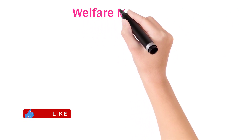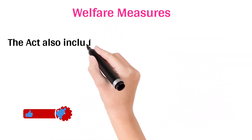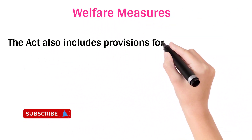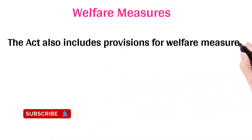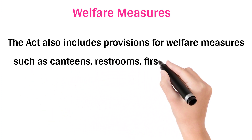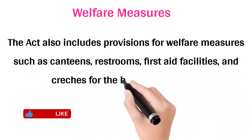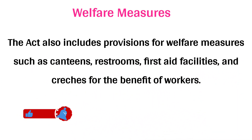Welfare Measures: The Act also includes provisions for welfare measures such as canteens, restrooms, first aid facilities, and provisions for the benefit of workers.